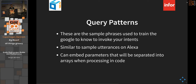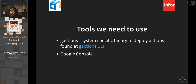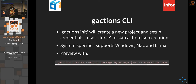The last part is HTTP execution. When it finds your action, it calls a URL to fulfill it. Rules: it must be SSL with a valid certificate, and all exchanges beyond that point are JSON. You'll need the gactions CLI binary — a command line tool — to get this working, along with the Google Console to set up your skill.